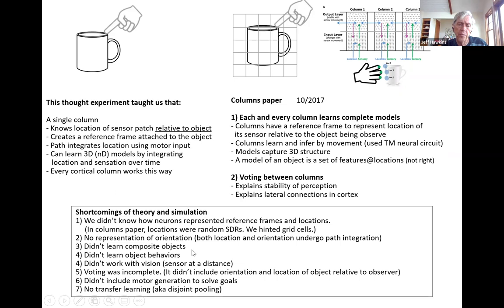At this time, we knew that objects were composed of other objects — something that's kind of been known for a long time, though not heavily discussed in neuroscience. This model didn't have anything to do with that. The model basically said an object is just a set of features at locations, with no concept that those features may be other objects, and that objects may be related to locations relative to other objects.